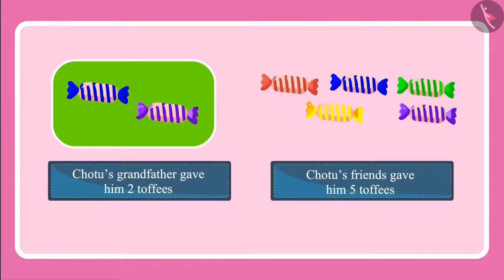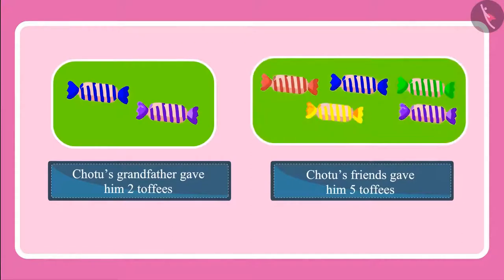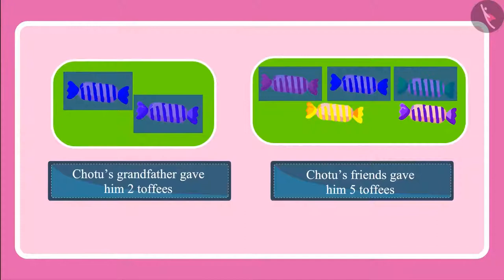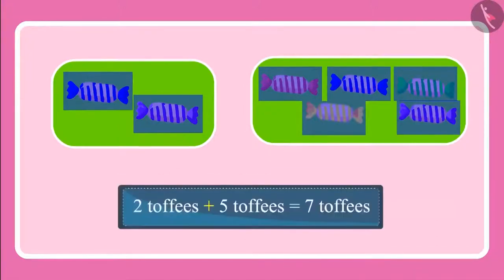So can you tell how many toffees did Chotu get in total? Chotu's grandfather gave him two toffees and his friends gave him five toffees. Two toffees and then five more toffees. Let's count and see: one, two, three, four, five, six, seven. This means Chotu now has seven toffees with him.